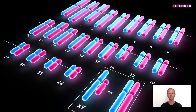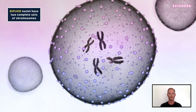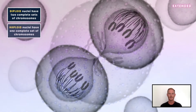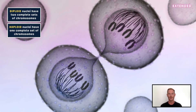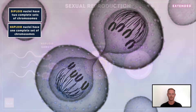Normal human cells have 23 pairs, or 46 individual chromosomes. Some organisms have more, and others have less. Cells that contain two complete sets of chromosomes are referred to as diploid cells. When gametes are produced, the pairs of chromosomes divide, meaning the number of chromosomes in the nucleus of each sex cell is halved. These cells are known as haploid cells.